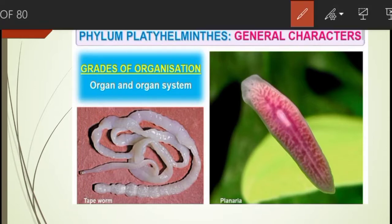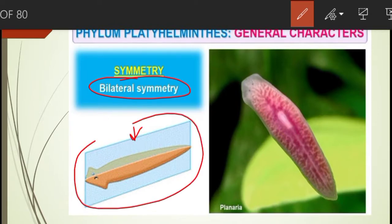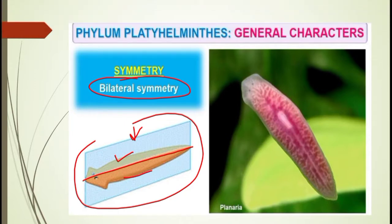Let us study some general features of this phylum. Number one is body organization — they have organ and organ system level of organization, meaning both organs and organ systems are present inside their body. Their symmetry is bilateral symmetry — when a plane is passed through the central axis of the body, the body can be divided into right and left halves.